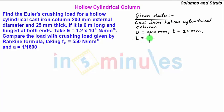The length of column is given as 6 meters which is equal to 6000 mm and the end condition is given as both ends hinged meaning that your equivalent length LE is equal to L.